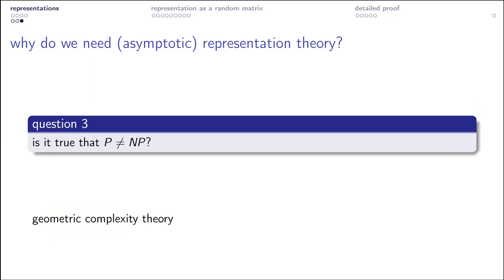Here we come to a million dollar problem — one of the Millennium Problems. There is a movement called Geometric Complexity Theory which has a concrete program that might, hopefully in about 100 years, give a proof that certain computational problems are hard. To follow this path, you need to construct certain algebraic, representation-theoretic obstructions for fast calculations of certain objects, and these are closely linked to representation theory. So these are three good reasons to study asymptotic problems in representation theory.